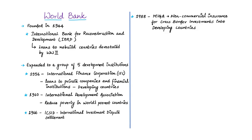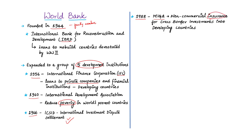The World Bank was founded in 1944, and India is a founding member. Initially called the International Bank for Reconstruction and Development, it provided loans to rebuild countries devastated by World War II. The bank expanded to a group of five development institutions. In 1956, the International Finance Corporation was established to give loans to private companies and financial institutions in developing countries. In 1960, the International Development Association was established to reduce poverty in the world's poorest countries, making poverty eradication the primary goal of the World Bank. In 1966, the International Centre for Settlement of Investment Disputes was established for international investment dispute settlement. In 1988, MIGA — the Multilateral Investment Guarantee Agency — was established to provide non-commercial insurance for cross-border investments in developing countries.